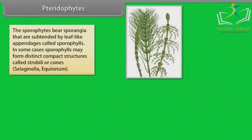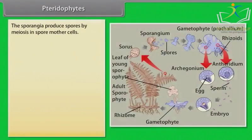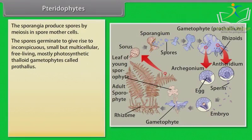The sporophyte bears sporangia subtended by leaf-like appendages called sporophylls. In some cases, sporophylls may form distinct compact structures called strobili or cones, as in Selaginella and Equisetum. Spores are the reproductive cells of non-vascular plants. The fern plant has rows of little black dots on the back of its leaves — these hold millions of tiny reproductive cells called spores. The sporangia produce spores by meiosis in spore mother cells. The spores germinate to give rise to inconspicuous, small but multicellular, free-living, mostly photosynthetic, thaloid gametophytes called prothallus.